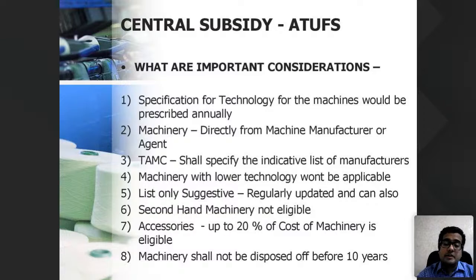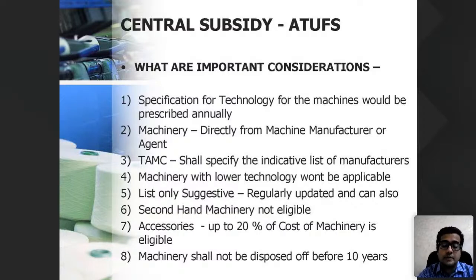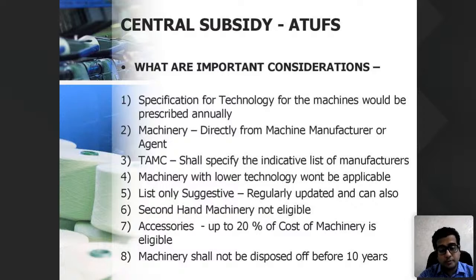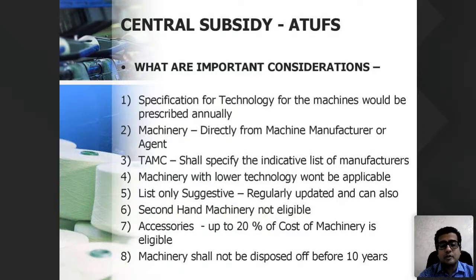Machinery can be purchased from an agent, but you must fulfill many conditions to ensure no brokerage or commission has been marked up and only the basic cost is being paid. ATUFS specifies an indicative list of manufacturers, which is only suggestive and regularly updated. Secondhand machinery is not eligible — only new machinery is eligible under ATUFS. Accessories up to 20% of the cost of machinery can be included.